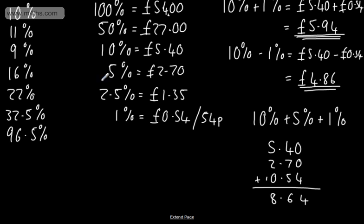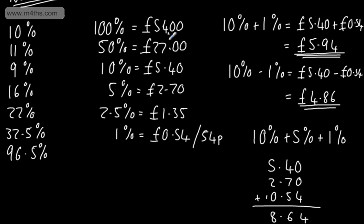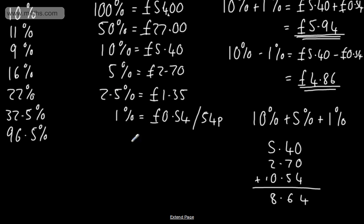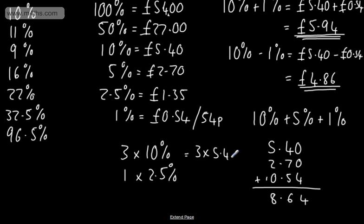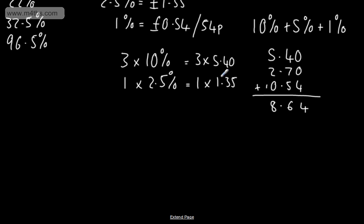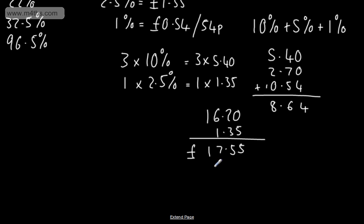For 22%, I could do 20% plus two lots of 1%, or use 25% minus three lots of 1%. For 32.5%, I'll do three lots of 10% (30%) plus one lot of 2.5%: 3 × £5.40 = £16.20, plus £1.35, giving £17.55.